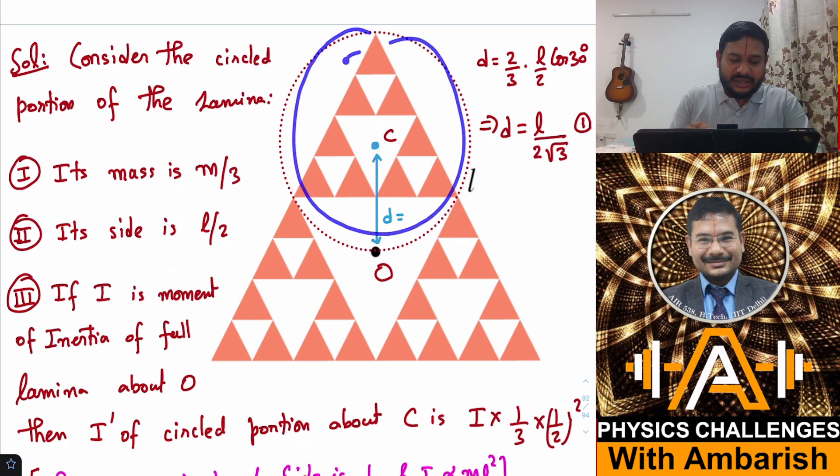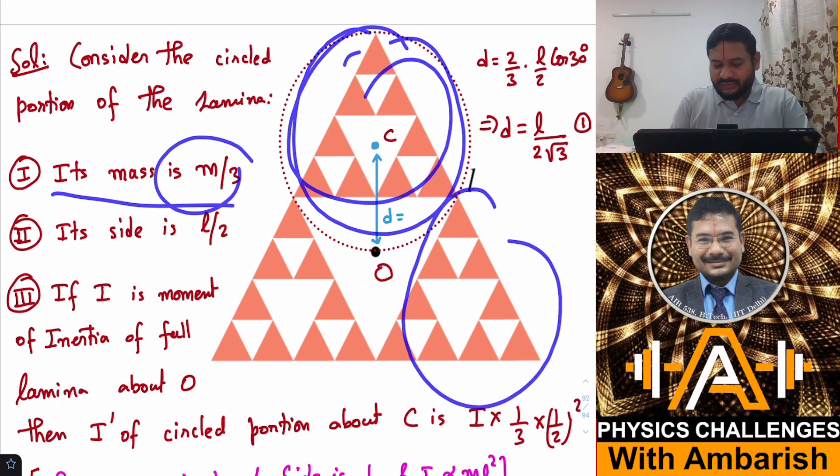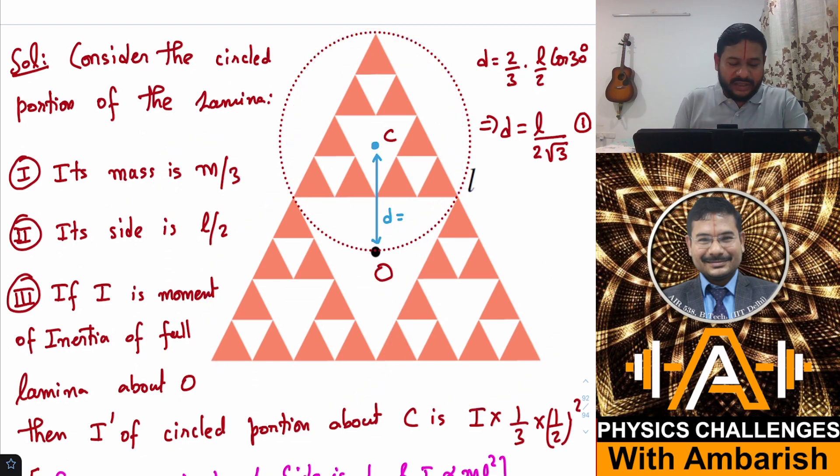I'm just focusing on this part. If we can say a few things about this part of the lamina, its mass must be m/3 because three such parts make the full thing. Its side is L/2 because the entire side is L, so it has got half the side.